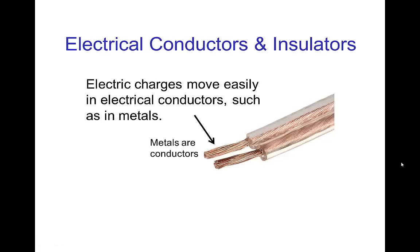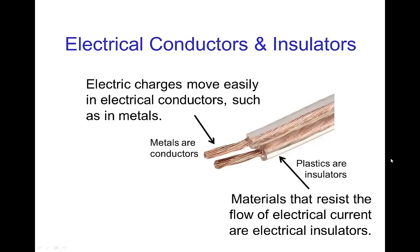Continuing with the water analogy, the pipes that carry the current in a circuit would be the conductors. Electrical charges move easily in electrical conductors, and the most common type of conductors are metals, so the electrons move very easily in a metal. There are also insulators — an electrical insulator is a material that resists the flow of electrical current.